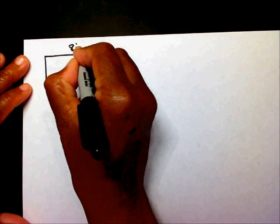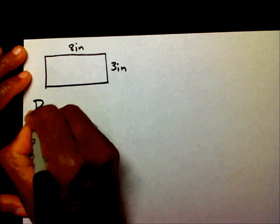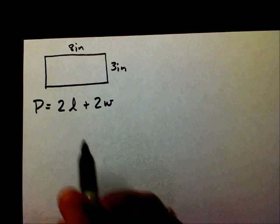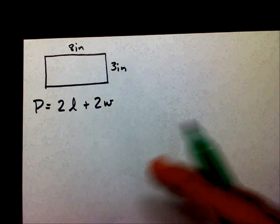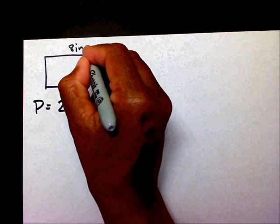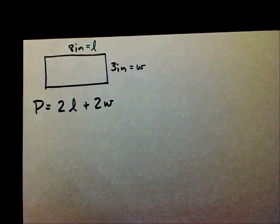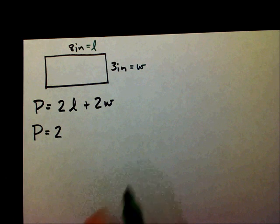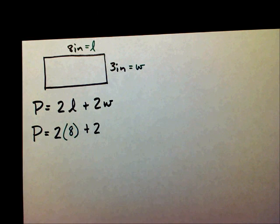So I have a rectangle — let's use that same rectangle we had: 8 inches and 3 inches. The formula is P equals 2L plus 2W. L stands for the length and W stands for the width. I'm going to label my length and my width. Since this is the longest side, I'm going to say this is my length. Since this is my shortest side, I'm going to say this is my width. So I'm going to write P equals 2 times — what is my length? My length is 8.